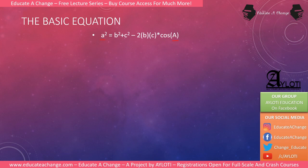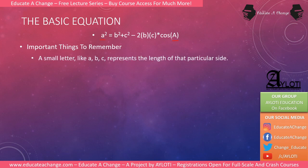So whatever side you select, the corresponding angle is the one you must use. Now, there are some basic things to remember in trigonometric equations. The first is that any small letter represents the length of a particular side — so small a means the length of side a, small b means side b, small c means side c, because they are small letters.